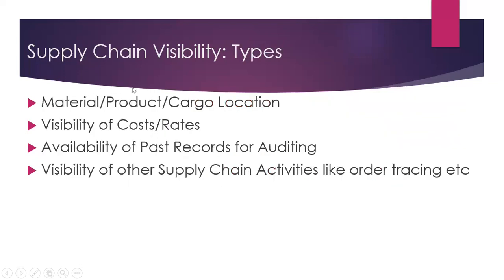What are the types of Supply Chain Visibility? It may be visibility of materials, products, or cargo location. It may be visibility of costs or rates. There may be availability of past records for auditing. It may also be visibility of other supply chain activities like order tracing.